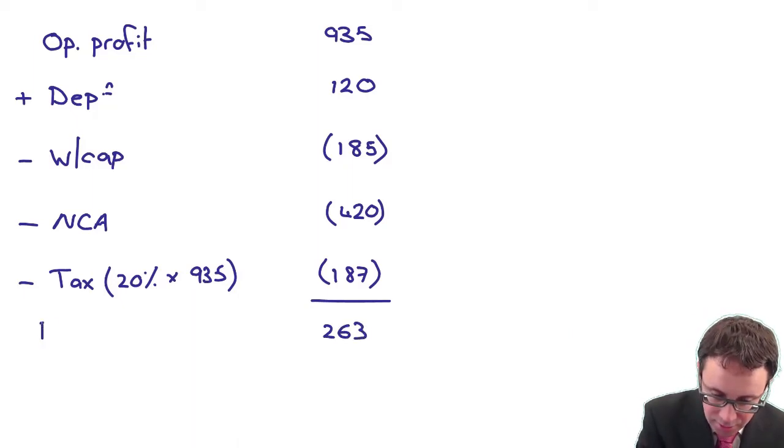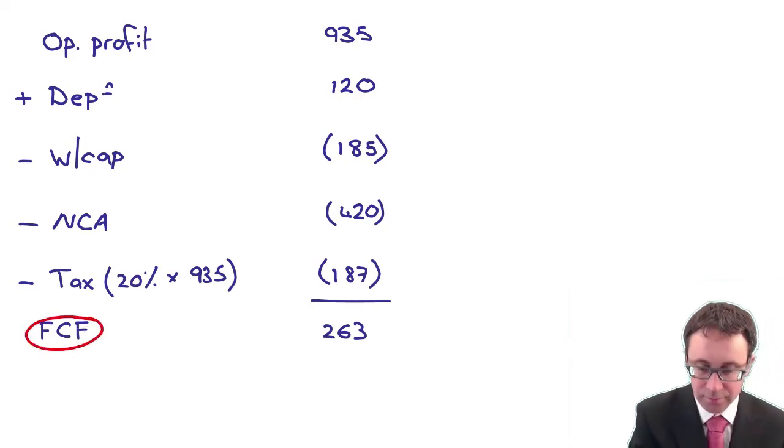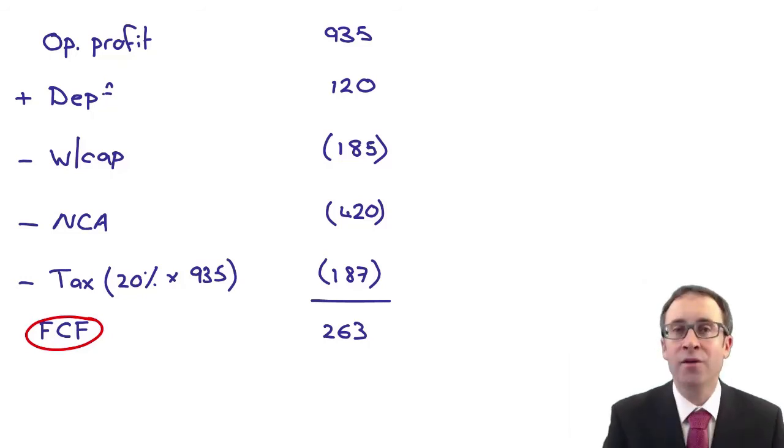That 263 is my free cash flow, FCF for short. So that free cash flow is the cash flow available to the debt holders and the equity holders, so effectively before any interest or dividend payments.